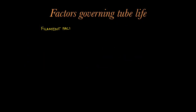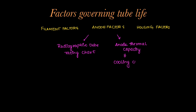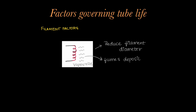Now we will learn what are the factors governing the tube life. There are filament factors related to cathode, anode factors related to anode, and housing factors. The filament in the cathode is made of tungsten. Once heated up, it will emit electrons. Also, the metal vaporizes over time which reduces the filament diameter, and the fumes will deposit onto the glass envelope, reducing its life.